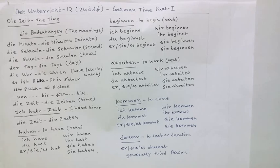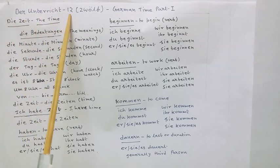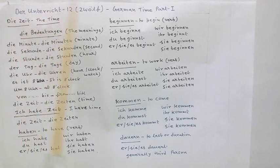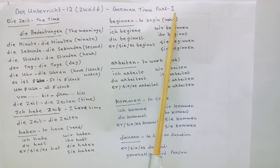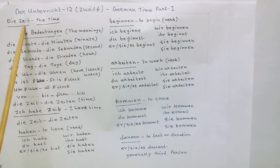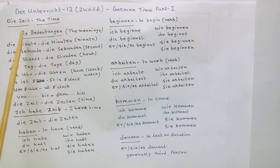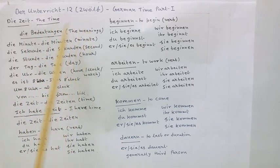Dear viewers, this is Unterricht Zwölf — Lesson 12: German time, part 1. Now, die Zeit — the time. Die Bedeutungen — the meanings.